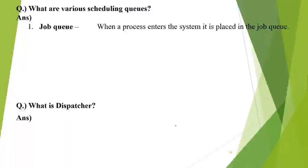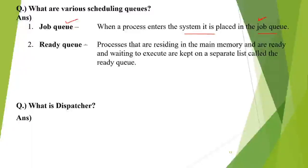There are various scheduling queues used to perform scheduling. When a process enters the system, it is placed in the job queue. A queue is a data structure used to represent different elements and their ordering. The job queue queues up processes coming into the system. Then we have the ready queue: processes residing in main memory in the ready state are waiting for CPU execution, and a separate list called the ready queue is maintained for those processes.